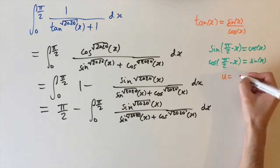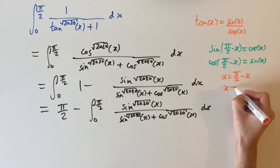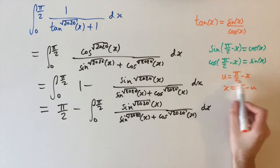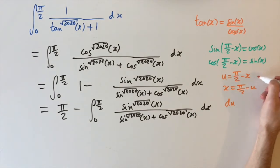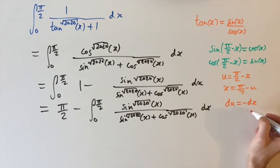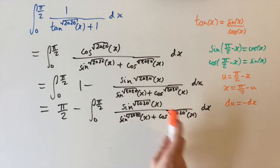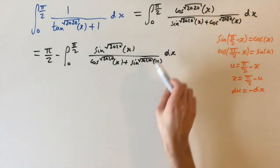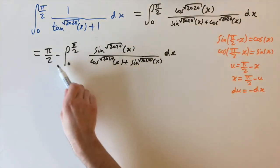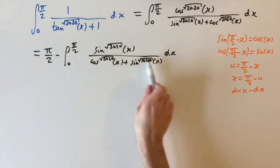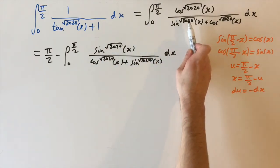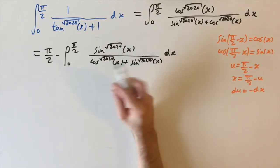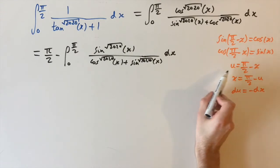Because we have limits between zero and pi over two, we can try a substitution of u equals pi over two minus x. That's essentially the same as x equals pi over two minus u, just swapping x and u. We'll need the derivative: du equals minus dx. Using this substitution, we can rewrite sines in terms of cosines and vice versa. So let's go ahead and apply this substitution.